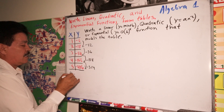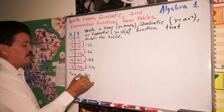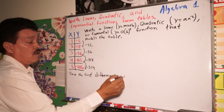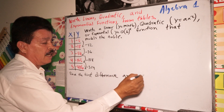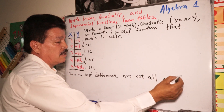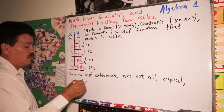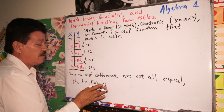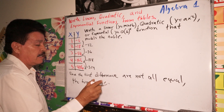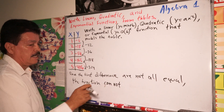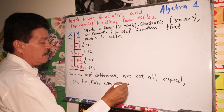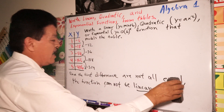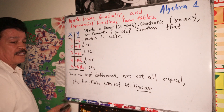Since the first differences are not all equal, the function cannot be linear. So now let's go and find the second difference.